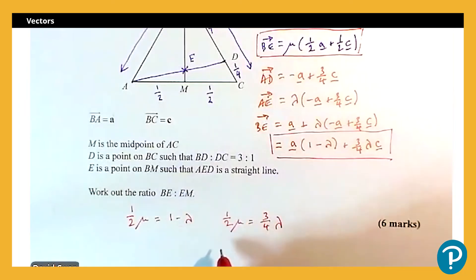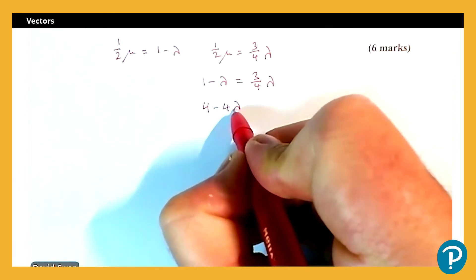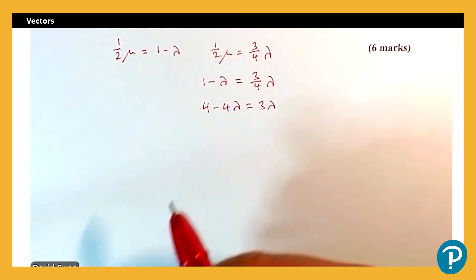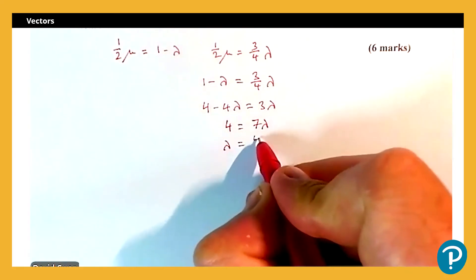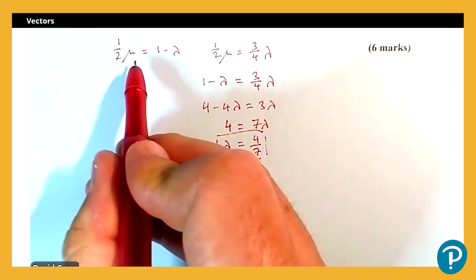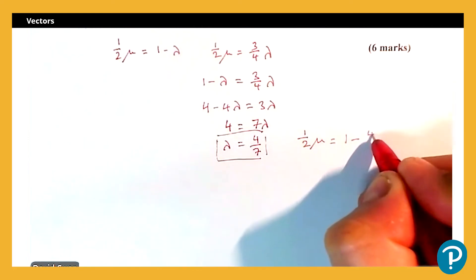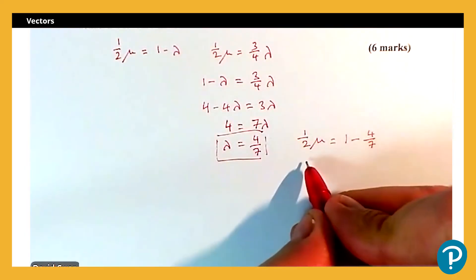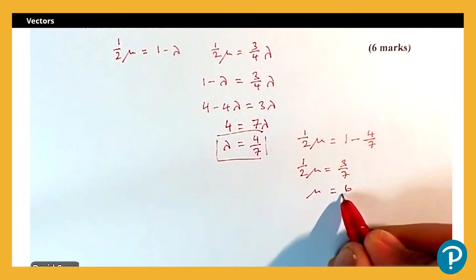Since both equations have ½μ, I can substitute one into the other: 1 − λ = ¾λ. Multiplying by 4: 4 − 4λ = 3λ, so 4 = 7λ, giving λ = 4/7. Using ½μ = 1 − λ = 1 − 4/7 = 3/7, so μ = 6/7.